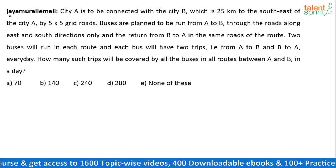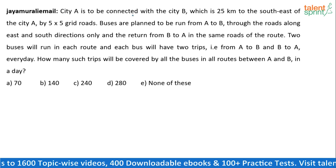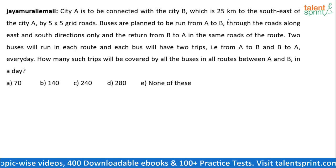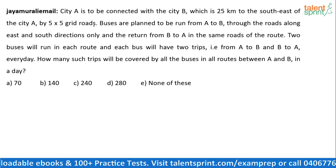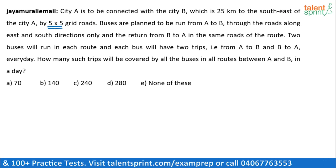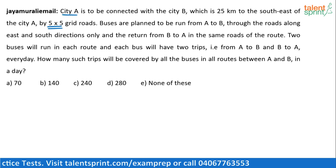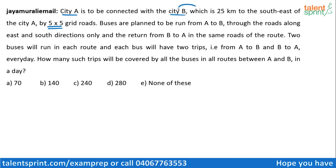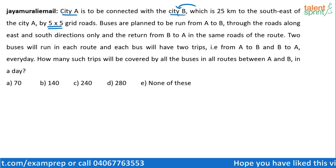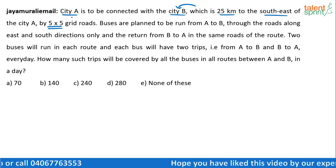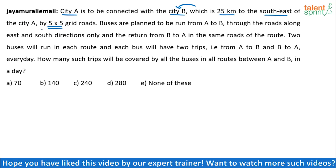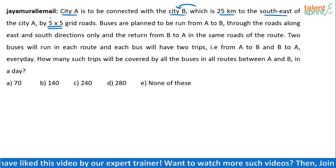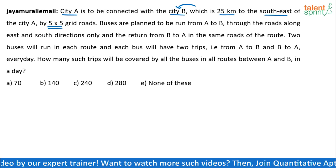Here's the question, posted by Jay Murli. It says: City A is to be connected with City B, which is 25 kilometers to the southeast of City A, by a five-by-five grid of roads. So there is City A and City B — City B is 25 kilometers to the southeast of City A. Now these two cities are connected by five-by-five grid roads. Do you understand what a five-by-five grid is?